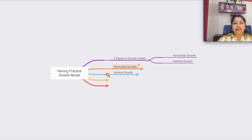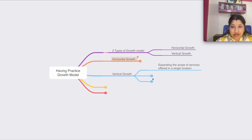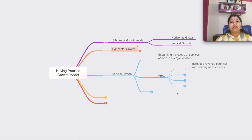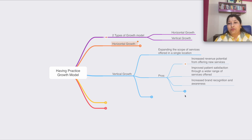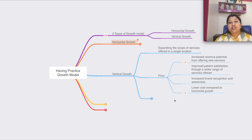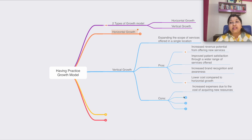The next is vertical growth. Vertical growth is you expanding the scope of services within the same location, within the same practice that you have right now. The pros are: increased revenue potential from newer services, improved patient satisfaction because you are offering services that help and benefit patients, increased brand recognition and awareness, and lower cost compared to horizontal growth — because you are in your existing setup and adding newer services.